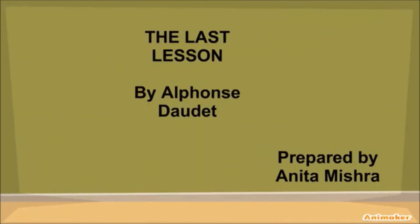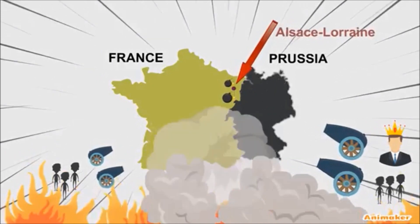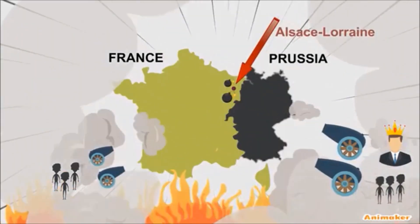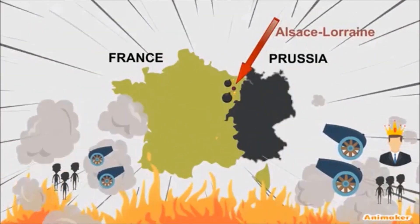Hello students. Today we are going to see a short animated movie on The Last Lesson, written by French writer Alphonse Daudet. This story is a story of change seen through the eyes of a little boy, Franz. The story also depicts the stoicism of one teacher, M. Hamill, as he and the people of Alsace-Lorraine deal with losing a part of their identity. The setting of this story is Alsace-Lorraine, which is a part of Europe between France and Prussia.